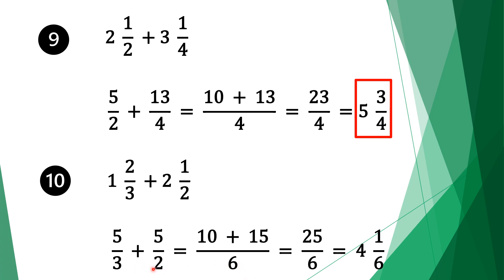6 is the common factor of 3 and 2. 6 divided by 3 is 2, 2 times 5 is 10. Move along the plus sign. Do the same for the second fraction: 6 divided by 2 is 3, 3 times 5 is 15. We add 10 and 15 which is 25, and bring the denominator 6. Our result is 25 over 6. Since it's an improper fraction, our final solution is 4 and 1 sixth.